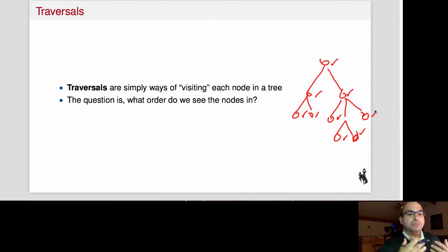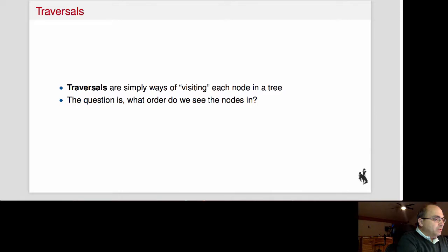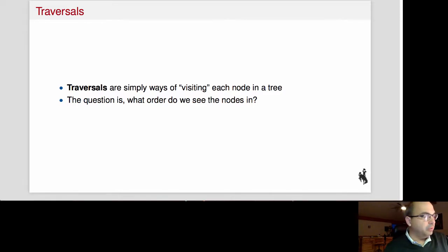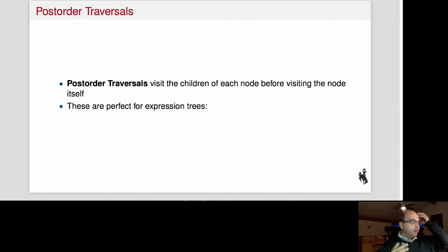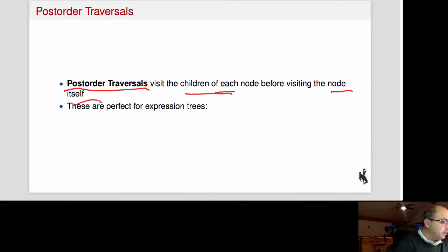There are three types of traversals that make sense. What I want you to focus on is the order in which we visit the nodes. The first is called post-order traversal. In a post-order traversal, we visit the children first and then we visit the node.